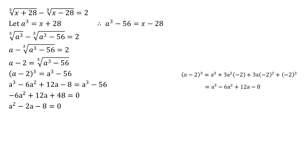So dividing through by negative six, we get a squared minus two a minus eight equals zero, which factorizes nice and easily into a minus four times a plus two.